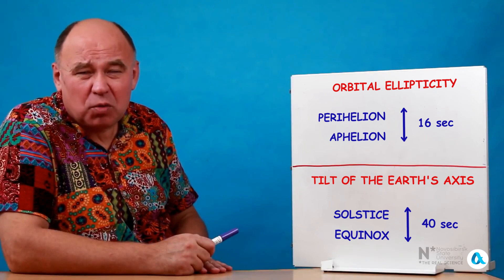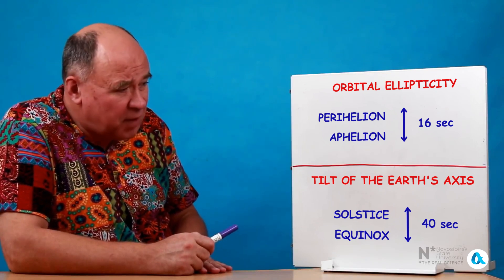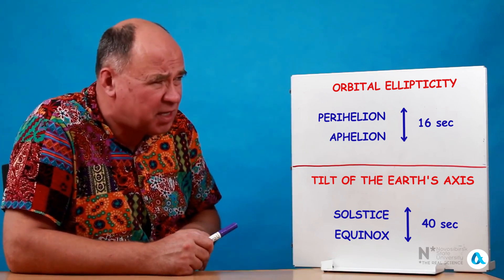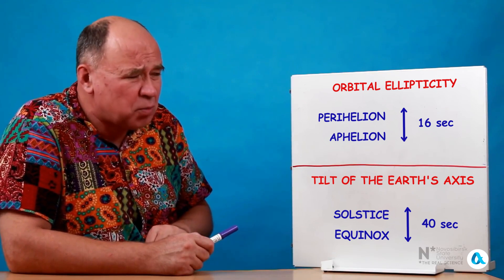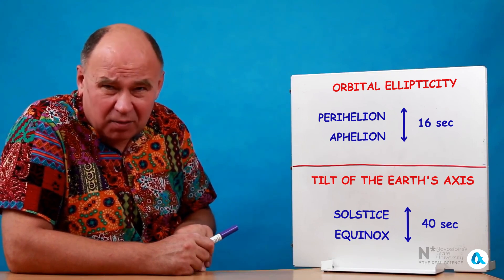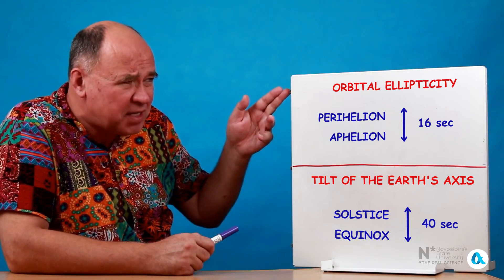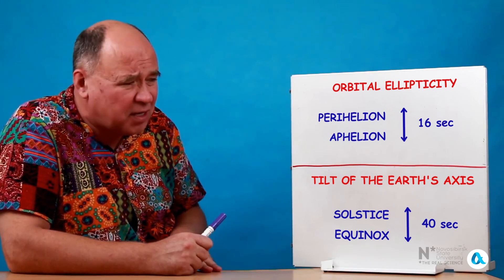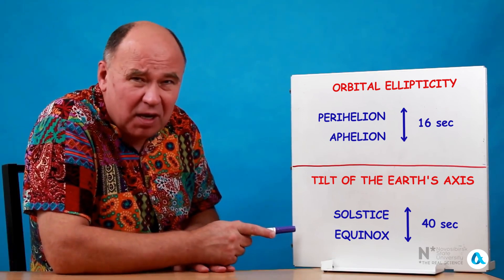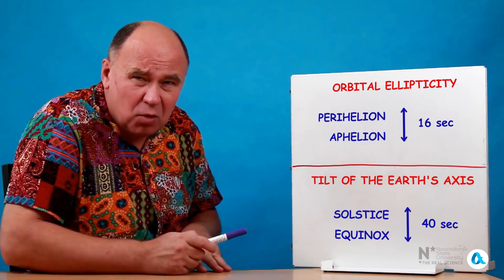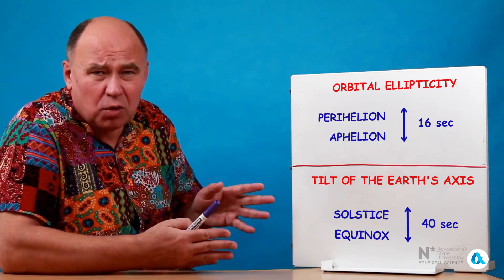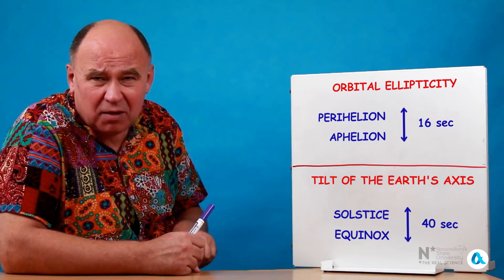Now we need to discuss what both effects provide in quantitative terms. If only the first effect existed — related to the ellipticity of Earth's orbit — solar days at perihelion would be 16 seconds longer than solar days at aphelion. Similarly, if only the second effect existed — related to the tilt of Earth's axis — solar days at the solstices would be 40 seconds longer than solar days at the equinoxes. Of course, both of these effects combine with each other, resulting in a specific deviation on any given day of the year.